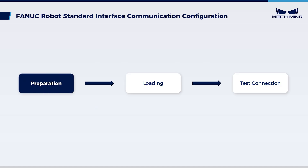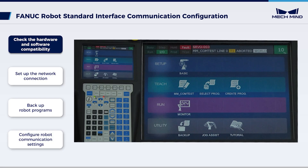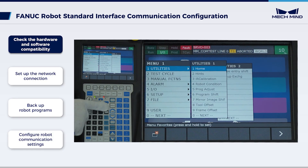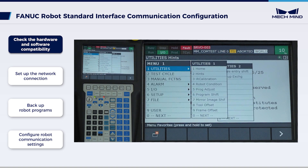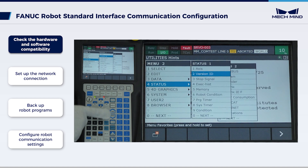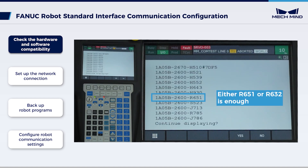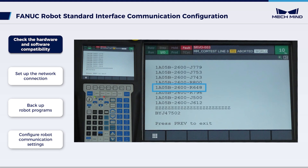To begin with, complete the preparation work. Confirm that the controller system software version is either version 7.5, version 7.7, version 8, version 9, or version 10.1. Please confirm that the additional controller software packages are either R651 or R632, as well as R648, which is required.